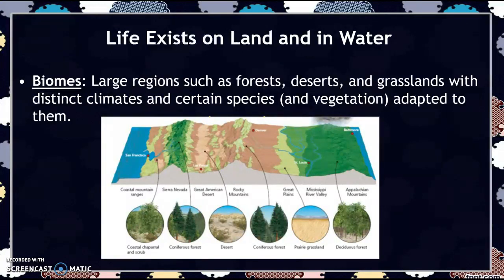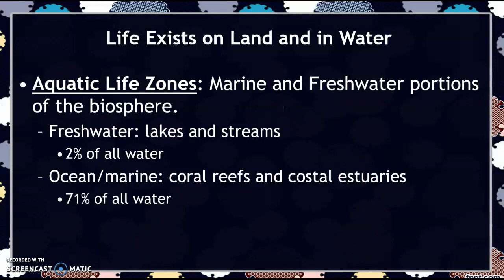Life exists on land and in water. One of the major ways we break up life on land is in biomes — large regions such as forests, deserts, and grasslands with distinct climates and certain species and vegetation adapted to them. Chapter 7 goes a lot more in depth into biomes. There are also aquatic life zones, which are marine and freshwater portions of our biosphere. Freshwater — lakes and streams — is about 2% of all water on Earth, while ocean and marine zones make up 71% and include open ocean, coral reefs, and coastal estuaries.